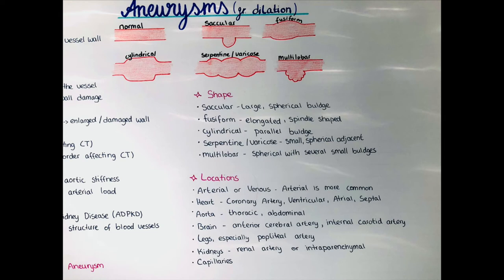The next form is the fusiform aneurysm, where there is an elongated spindle-like outbulging on both sides of the blood vessel. This is often seen in Marfan syndrome in the abdominal aorta. An aneurysm can also be cylindrical — similar to the fusiform shape — with a parallel outbulging on both sides. Then there is the serpentine or varicose aneurysm, where several small spherical aneurysms are adjacent to each other, and a multilobar shape where one spherical aneurysm has several small bulges on it.